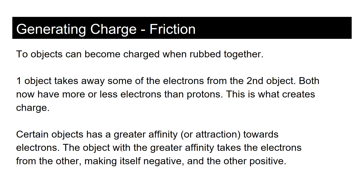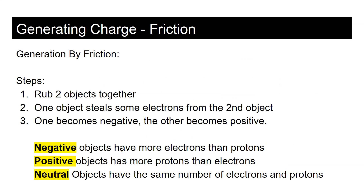Certain objects have a greater affinity — or attraction — toward electrons. The object with greater affinity takes electrons from the other, making itself negative and the other positive. The object that wants electrons more takes them from the object that doesn't want them as much, making itself negative because it now has more electrons than protons.